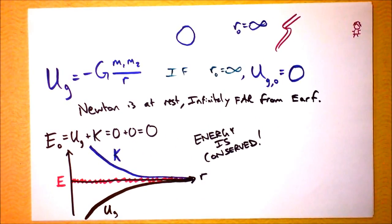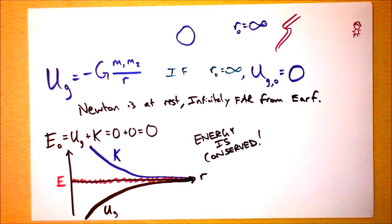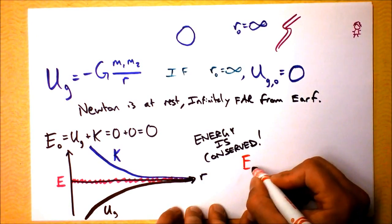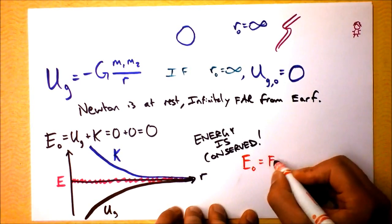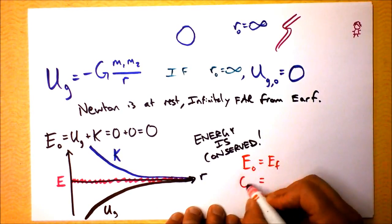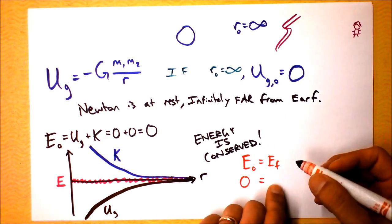When Newton gets far closer to Earth, we can figure out how fast Newton is going. Energy is conserved, so E-naught is E-final, or mechanical energy initial is mechanical energy final, as we used to say. Zero is going to be the final energy of Newton.